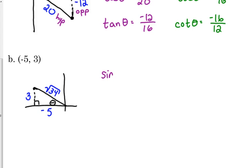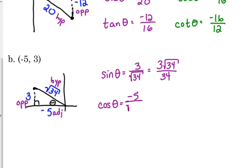I'm going to go back and label: the opposite is 3, the adjacent is negative 5, the hypotenuse is the square root of 34. So the sine is 3 over the square root of 34. If we rationalize that, it's going to be 3 square roots of 34 over 34, and 3 over 34 does not simplify. Cosine is the adjacent over the hypotenuse, negative 5 over the square root of 34. That also needs rationalizing, so negative 5 square root of 34 over 34.